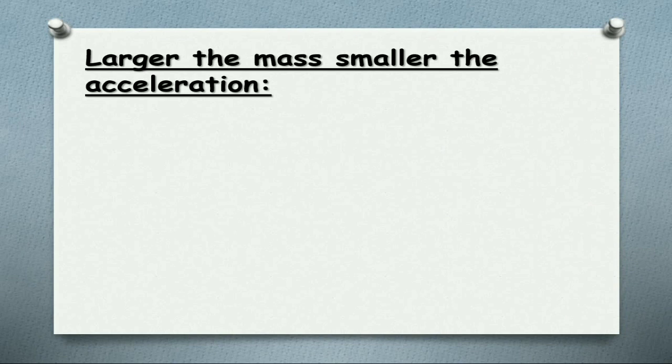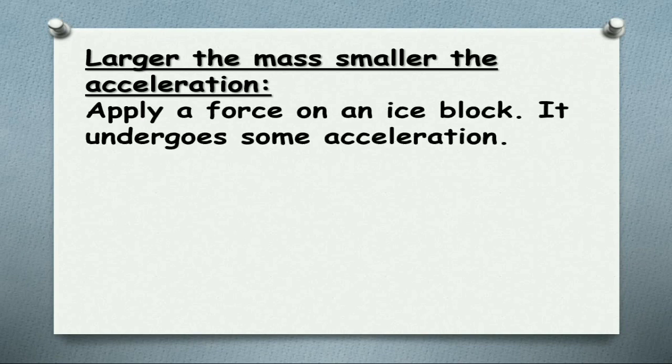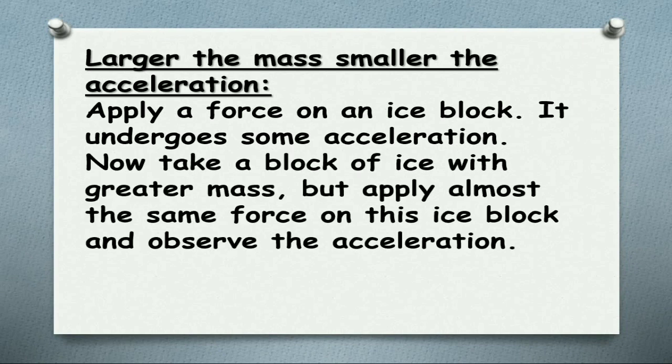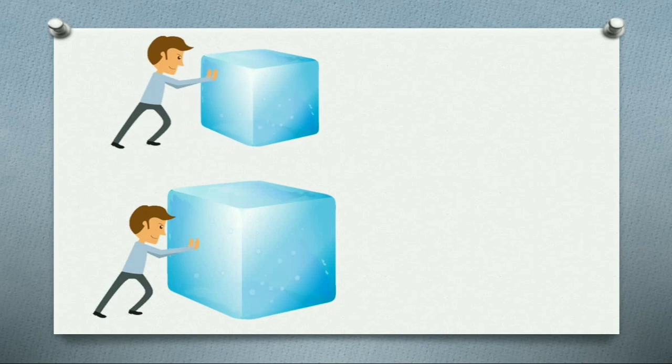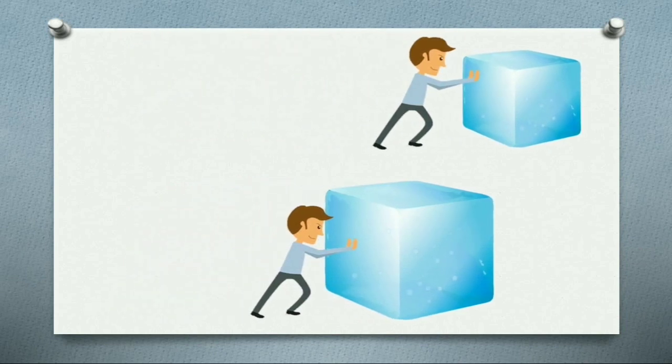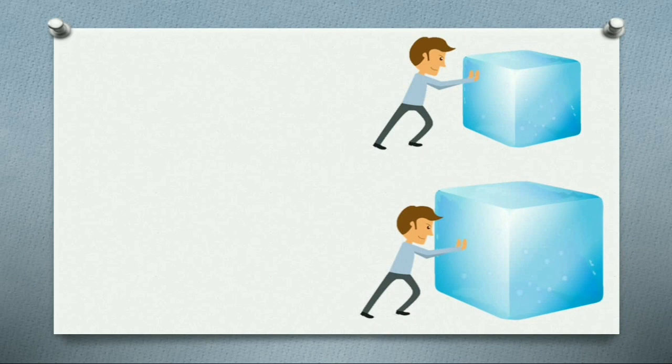Now let us check the relation between mass and acceleration. Larger the mass, smaller the acceleration. Or smaller the mass, larger the acceleration. Apply a force on the ice block, it undergoes some acceleration. Now take a block of ice with greater mass, a bigger ice block, but apply almost the same force and observe the acceleration. We have taken two ice blocks, one bigger and one smaller. If you apply the same force, which moves faster? The one with lower mass moves faster.